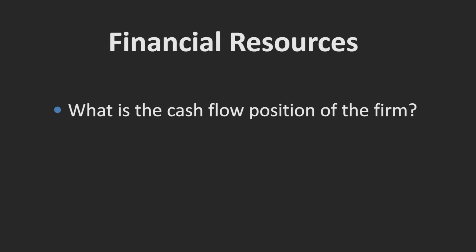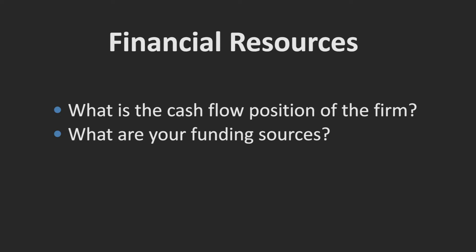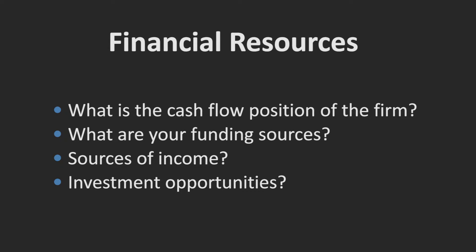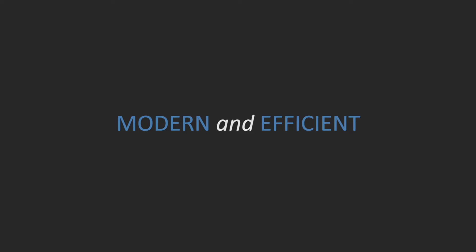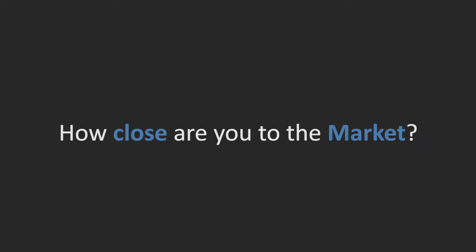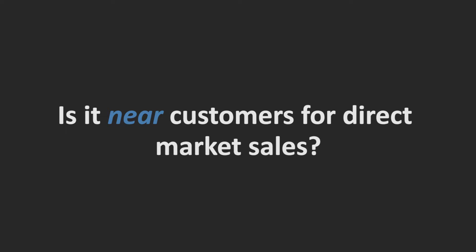Examples of areas typically considered include financial resources: what is the cash position of your firm, what are your funding sources, sources of income and investment opportunities? Physical resources: is your physical facility and equipment modern and efficient? How close are you to the market? Is your company's location near a major highway for easy distribution for wholesale sales? Is it near customers for direct market sales?